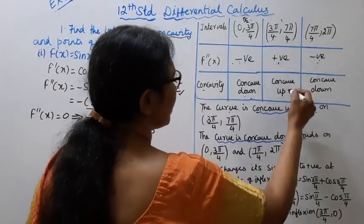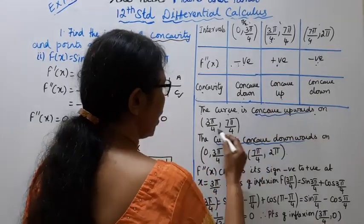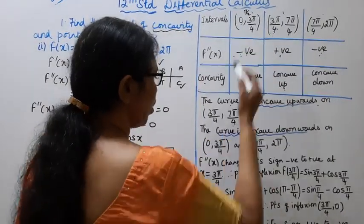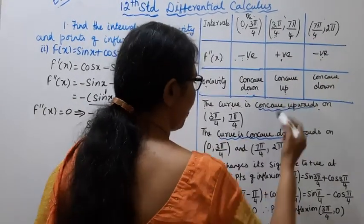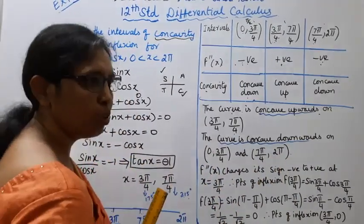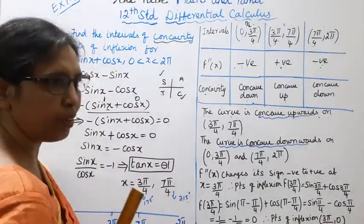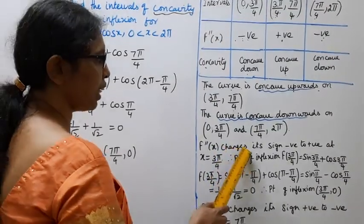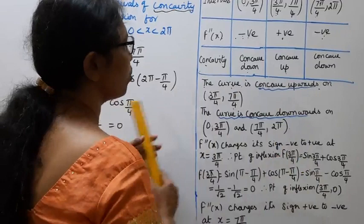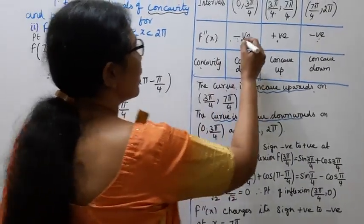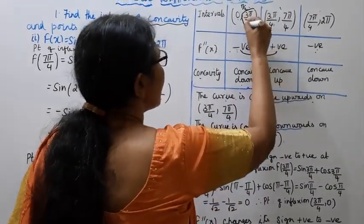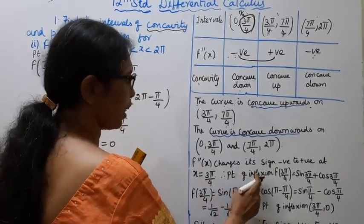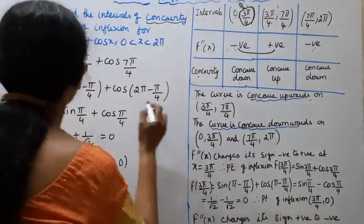The curve is concave upward on (3π/4, 7π/4) and concave downward on (0, 3π/4) and (7π/4, 2π). f double dash of x changes its sign from negative to positive at x = 3π/4, giving a point of inflection.